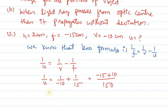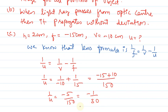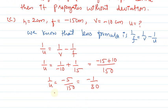So 1/u = -5/150 = -1/30. From this, if you cross multiply, then u = -30 cm.